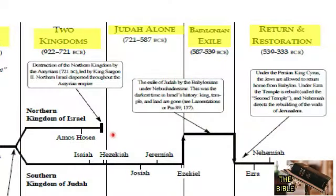They would not listen. God warned them and sent messengers, many of whom were persecuted. Finally, Assyria came and took the northern tribes of Israel into exile, dispersing them — and that was the end of the northern kingdom. However, this does not mean the ten tribes were lost, because righteous people from the north migrated south, and people from the south moved north, so there was no truly 'lost tribe' of Israel.